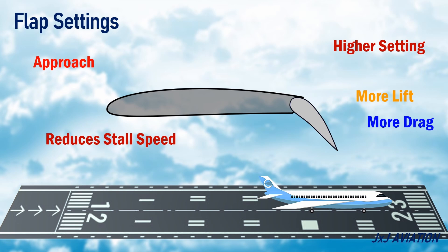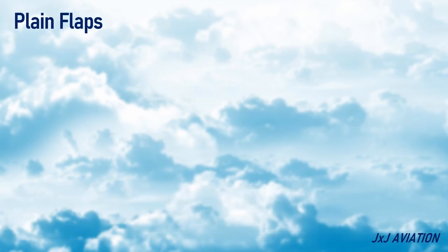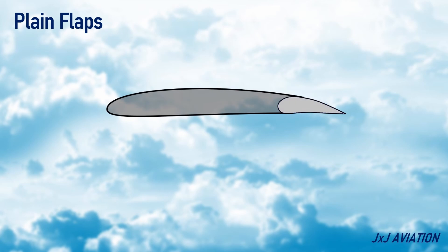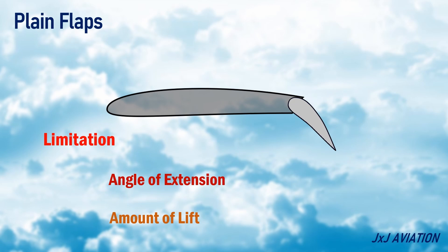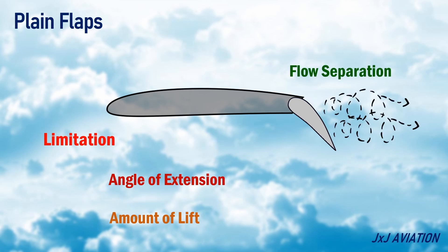Now let's look at the different types of flaps. Plain flaps are connected to a hinge at the trailing edge of the wing. These flaps rotate downwards when extended. There is a limitation to the angle of extension and the amount of lift that this flap can generate. This is because when the flaps are extended, the air flowing over the top surface of the wing loses its energy, which can lead to flow separation over the wings.